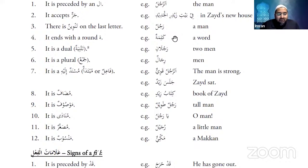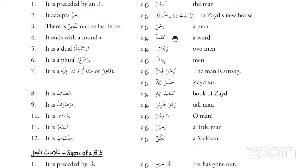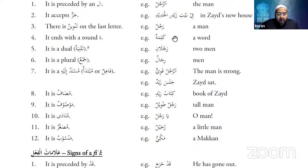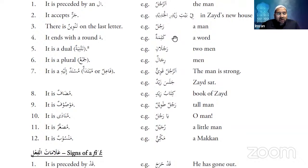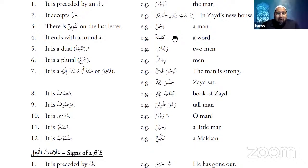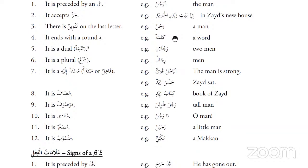The fourth sign: a noun ends with a ta marbuta — a round ta. Like 'kalimatun'. We never came across a ta marbuta at the end of a past or present tense verb. A verb will never end with a ta marbuta, because ta marbuta is a sign of a female noun.